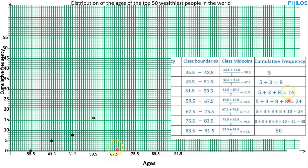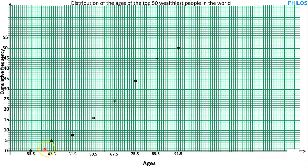Then the upper class boundary of the fourth class (67.5) is plotted against its cumulative frequency of 24. The upper class boundary of the fifth class (75.5) is plotted against its cumulative frequency of 34. The upper class boundary of the sixth class (83.5) is plotted against its cumulative frequency of 45. The last class boundary is 91.5, plotted against the cumulative frequency of 50. Now we draw a smooth curve passing through all the points — starting from the first point, going up through each point, up to the last. You do not come back down. This is the ogive.